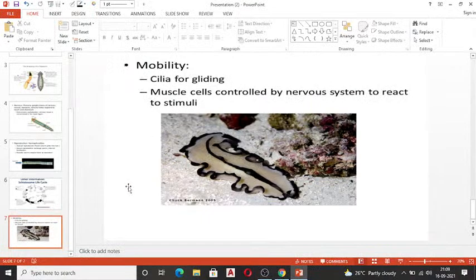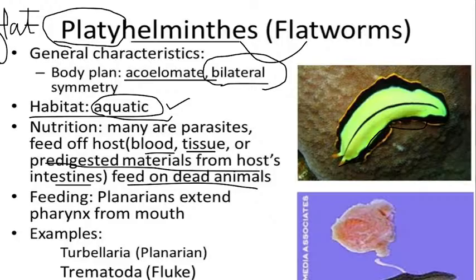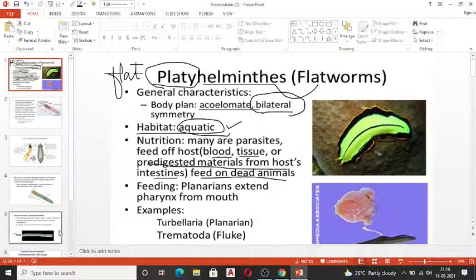To summarize the three classes: Turbellaria undergoes indirect development and produces free-swimming ciliated Müller's larvae. Trematoda includes Fasciola hepatica, the liver fluke, and Schistosoma, the blood fluke, which enters through snails with humans as primary hosts. We will be learning about their life cycles in more detail in the next class.